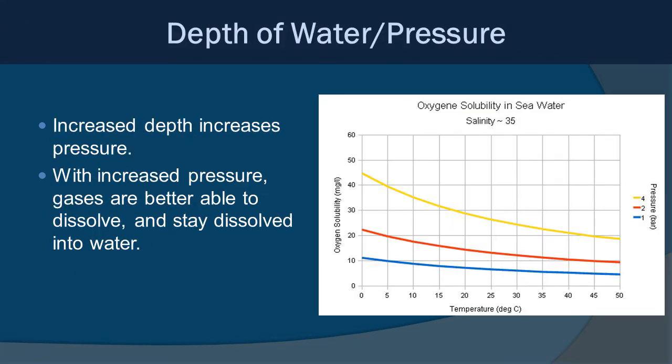Now let's go deep. The deeper you get into the ocean, the higher the pressure, and this does have an effect on dissolved gases. Increased depth increases pressure, and with increased pressure, gases are better able to dissolve and stay dissolved in water. Looking at the graph, with solubility of oxygen on the y-axis and temperature on the x-axis, there are three lines representing different pressures — 4 being the highest, then 2, then 1. The higher pressure line clearly correlates with higher solubility of oxygen.